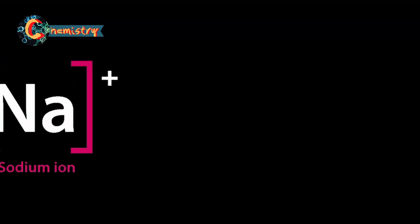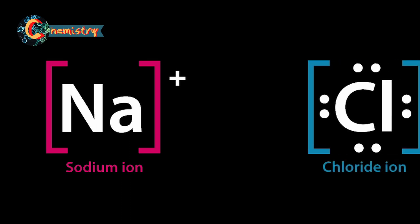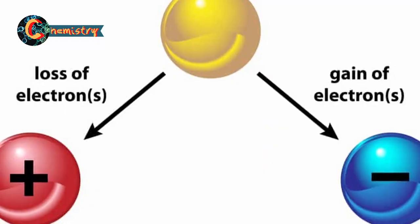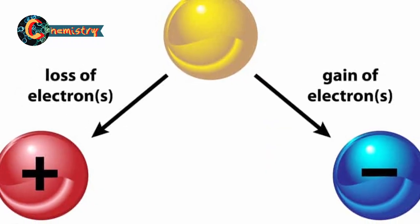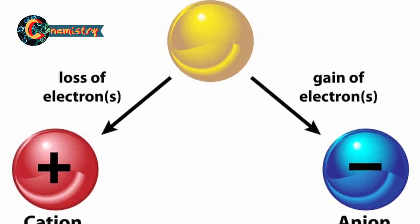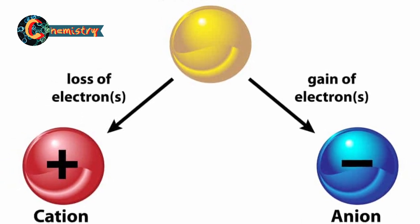Let's take a brief step back to understand what salt effectively is. It is an ionic compound consisting of the positive ion of a base, called a cation, and the negative ion of an acid, called an anion. An ion is an atom or a group of atoms, positively or negatively charged, depending on its number of protons or electrons.